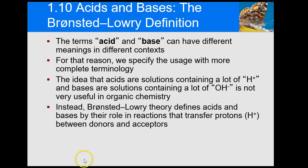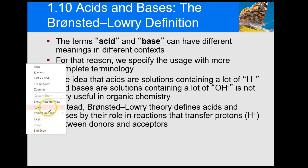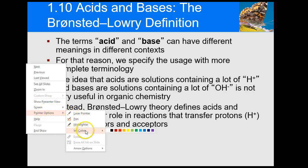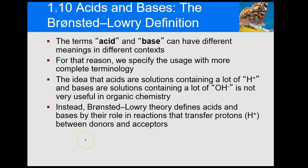The Arrhenius definition is basically: if you have a compound that ionizes and forms H-plus ions, it's an acid. If you take HCl and put it into water, it ionizes into H-plus ions and Cl-minus ions, and the formation of H-plus ions implies it's an acid.